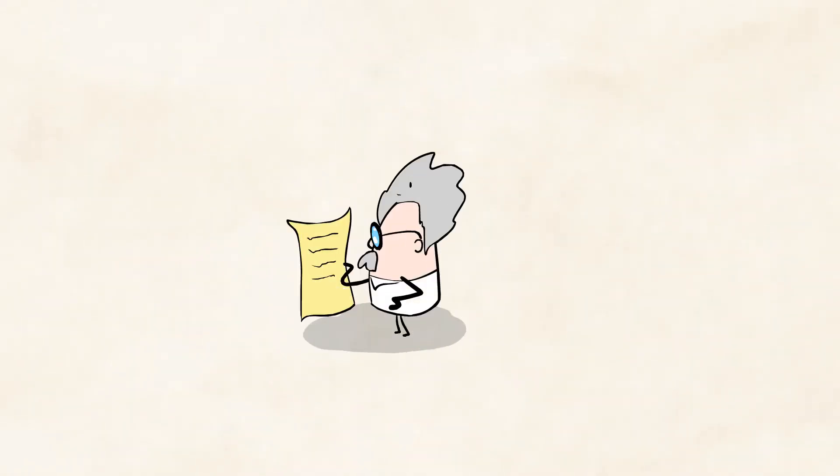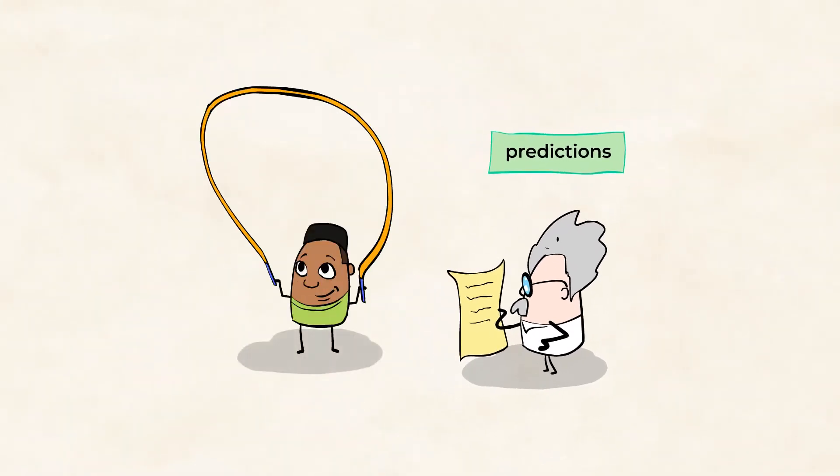If you know the pattern that a moving object is following, then you can make predictions about where it'll be in the future. For example, when you jump rope, you're using the pattern of the rope swinging around you. And you know that the rope is going to swing down towards your feet, and you predict the timing of when to jump.